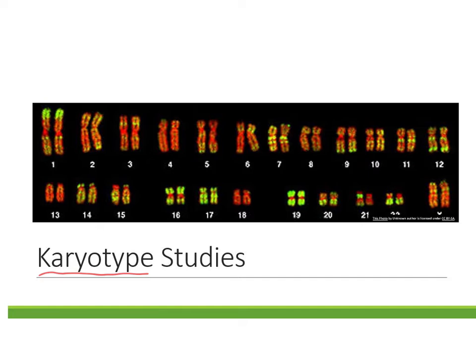Looking at a karyotype, you can see the chromosome pairs are organized from largest to smallest, except that the 23rd pair is the sex chromosomes. We can use karyotypes to study whether someone has two chromosomes for each pair like they're supposed to. This leads us to non-disjunction — studying whether they have just one chromosome where they should have two, or three chromosomes instead.